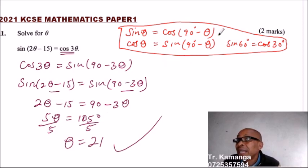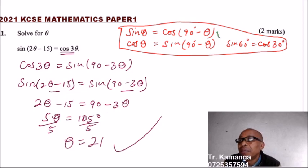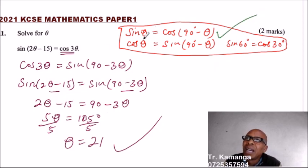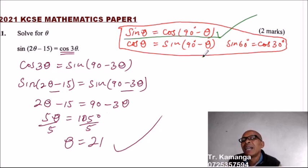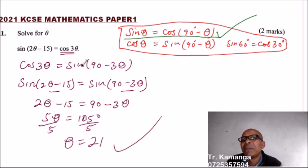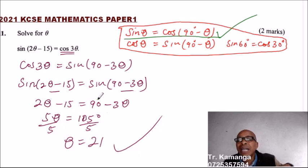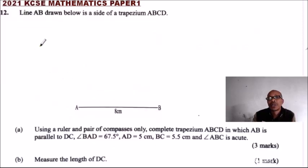The most important thing to remember for this question is the complementary angle property: without it, there is no other way to arrive at the answer. Applying it correctly earns you two marks. Now, question number 12: line AB drawn below is a side of trapezium ABCD.